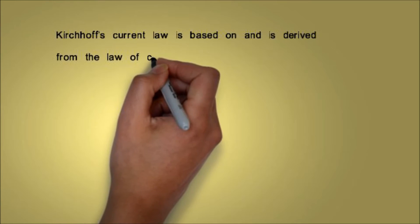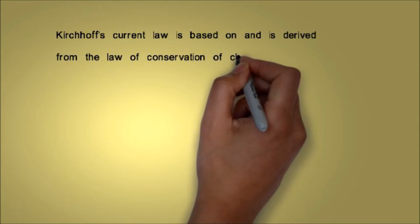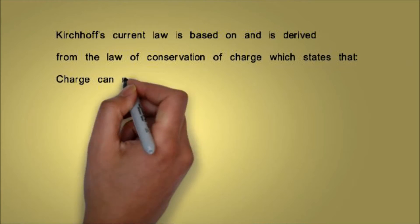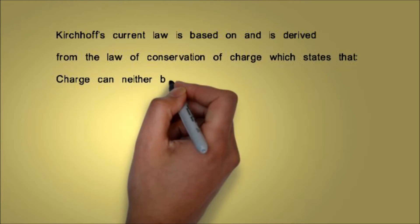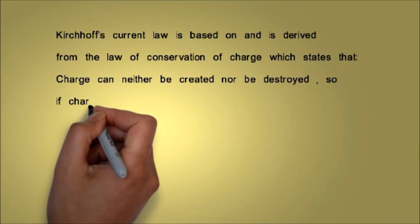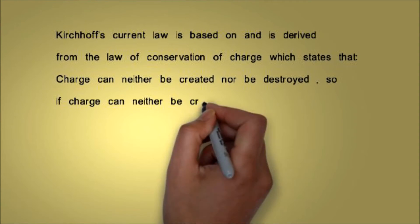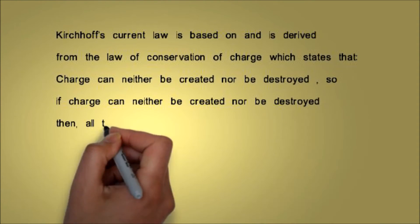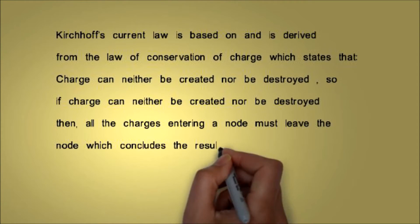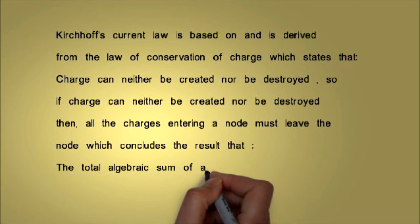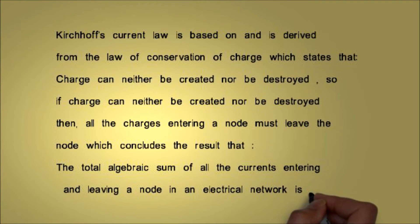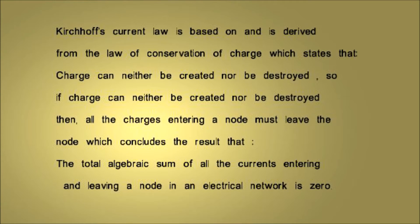Kirchhoff's Current Law is based on and derived from the Law of Conservation of Charge, which states that charge can neither be created nor destroyed. So if charge can neither be created nor destroyed, all the charges entering a node must leave the node, which concludes that the total algebraic sum of all the currents entering and leaving a node in an electrical network is zero.